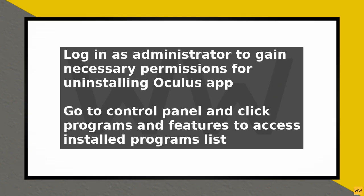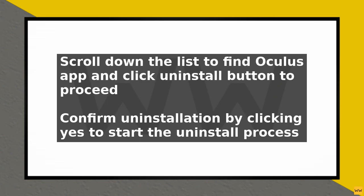Next, go to your Control Panel, which can be found in your Start menu. In the Control Panel, click on Programs and Features. This will take you to a list of all the programs installed on your computer. Scroll down the list and find the Oculus app and click on it to select it.